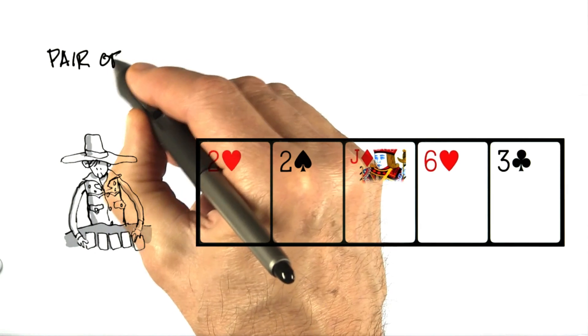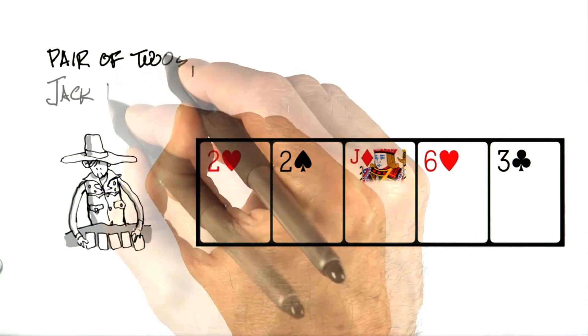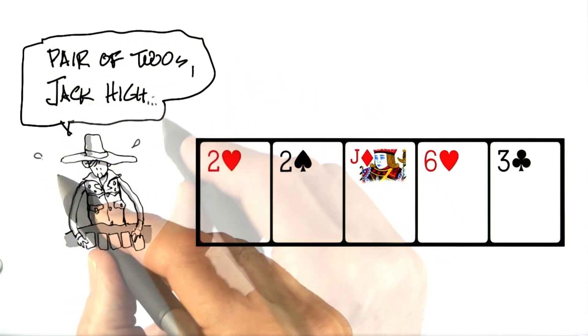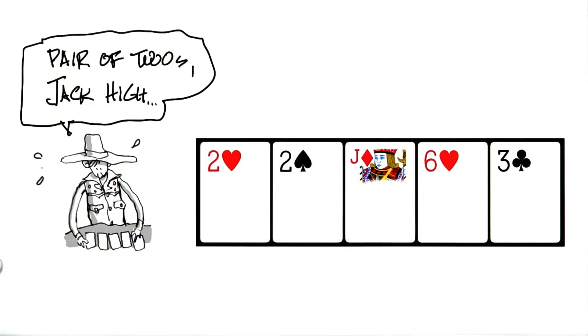And here our player declares, pair of 2s, jack high. That partially describes the hand. Notice we've lost the exclamation point. He's not so excited about his hand this time. So, a pair of 2s, that's down to ranking number 1. Then the pair of 2s is the first tiebreaker, and then all the cards in the hand.